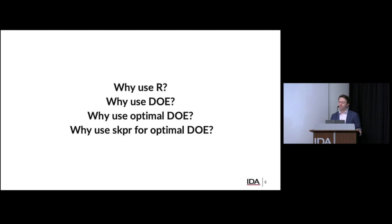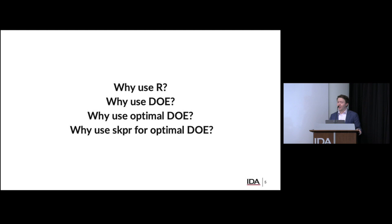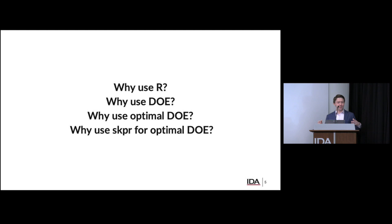Over the next few slides, I'm going to answer a series of slightly more specific questions. First, why do we want to use R? What are the benefits of R? Then I'm going to talk about why we use DOE and what value it brings to your organization's test design and analysis. Then specifically, why we do optimal DOE — design of experiments is a hundred-year-old field going back to Fisher, but in the last 30 years we've had a real revolution in computational power enabling much more adaptable, customized designs using optimal DOE. And finally, why do we want to use Skipper for optimal DOE in R, versus something like JMP or StatEase?